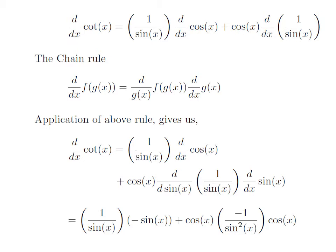As the derivative of sine of x is cosine of x, and the derivative of cosine of x is minus sine of x, the derivative of 1 divided by sine of x with respect to sine of x is minus 1 divided by the square of sine of x.